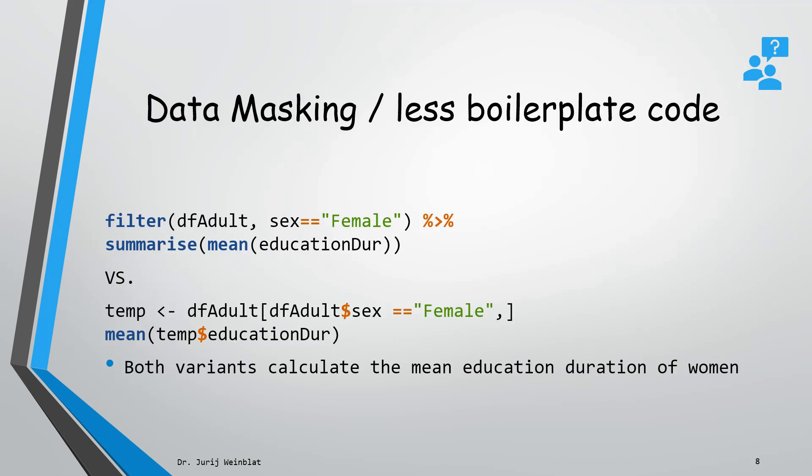I announced that data masking is introduced and helps reduce boilerplate code. Let me explain. First, we have a data frame called dfAdult. I'll give more insights about this data frame later, but for now it's important to know there are two columns: sex and educationDur.